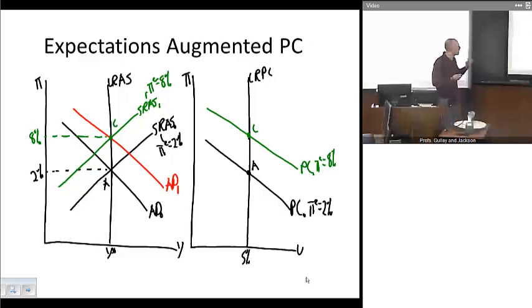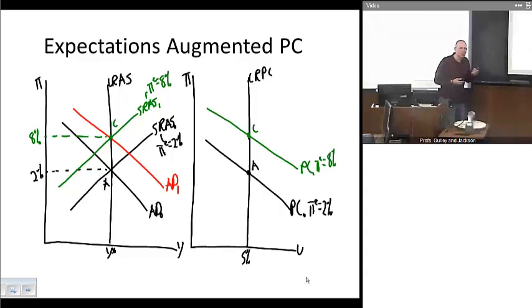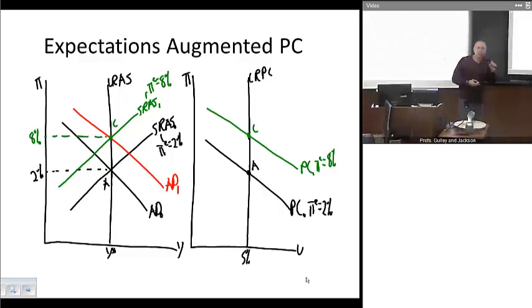We start out at point A. The Fed pursues an expansionary monetary policy, shifting the aggregate demand curve to the right. But simultaneously, because inflation expectations have risen, the short-run aggregate supply curve starts to shift back to the left at the same time. The economy adjusts from point A toward point C — we don't observe a short-run increase in output, and therefore we don't observe a short-run decrease in the unemployment rate. What happens in the left graph matches up with the right graph: the economy starts at point A and ends at point C in the long run. There is no short-run tradeoff between inflation and unemployment as long as inflation expectations adjust accordingly — and that's a really important policy consideration.